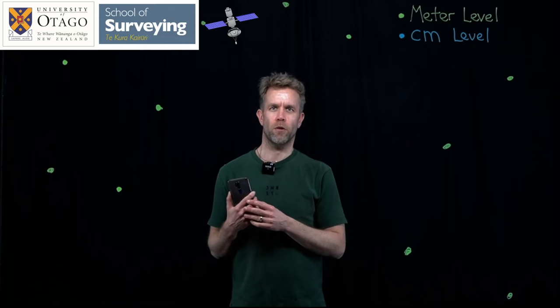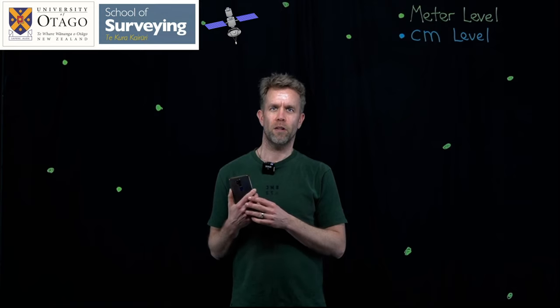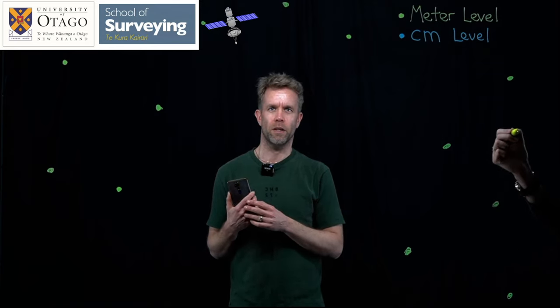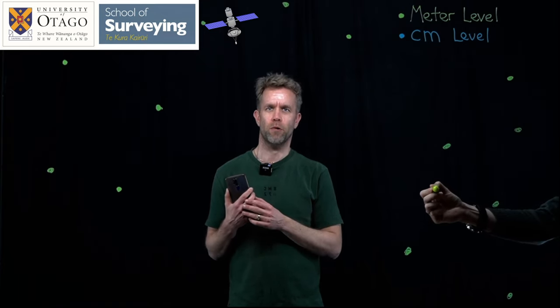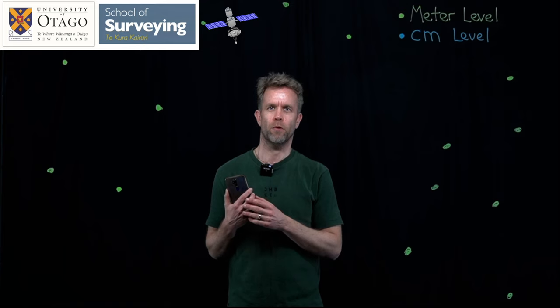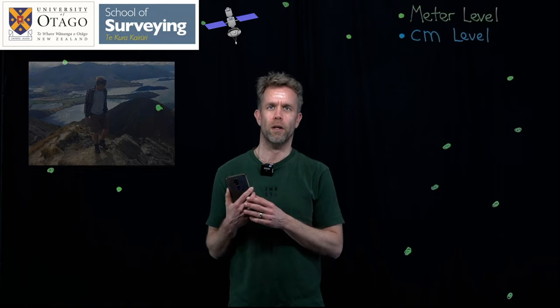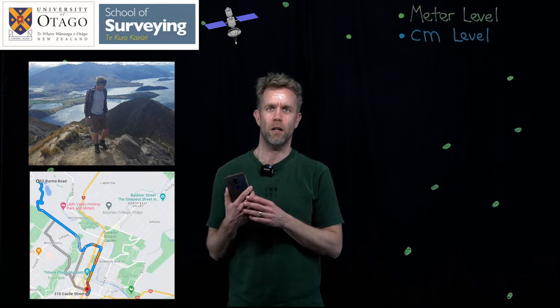You are familiar with the GPS technology in your smartphone. This enables you to determine your position with meter-level accuracy, as shown by the green dots right in front of me. However, such positioning accuracy can only enable you to use your smartphone for hiking, navigation, and other applications.